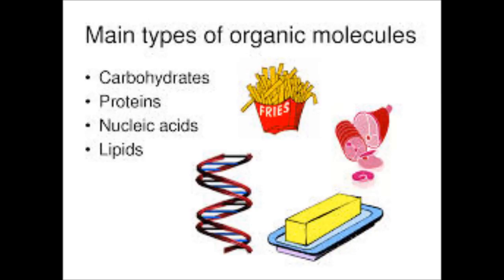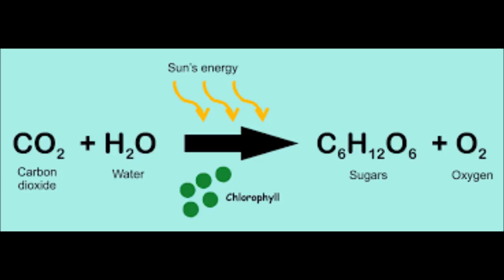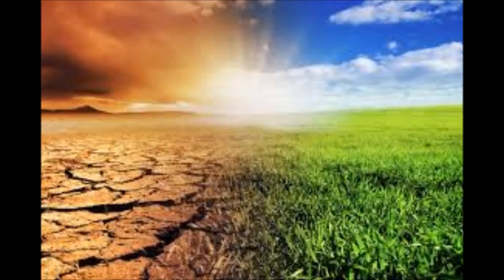The Calvin cycle is often called the dark reactions. Photosynthesis is affected by climate. Factors that are included are light intensity, CO2 level, and temperature.